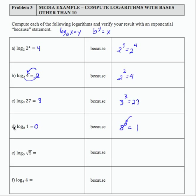So log base 8 of 1 equals 0 because 8 raised to the 0 power equals 1. So it's critical that you check your logarithmic result by changing to exponential form and see if the result is correct.